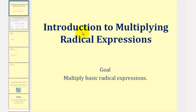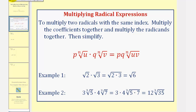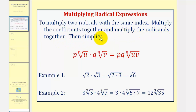Welcome to Introduction to Multiplying Radical Expressions. To multiply two radical expressions with the same index, multiply the coefficients together and multiply the radicands together, then simplify.